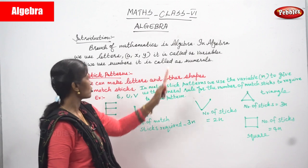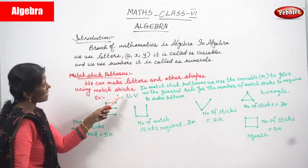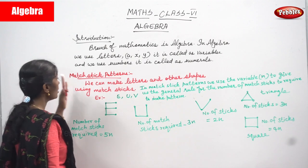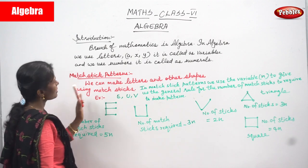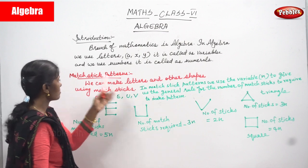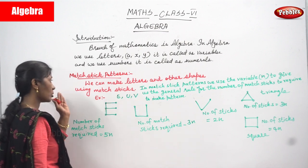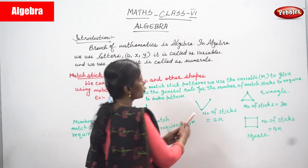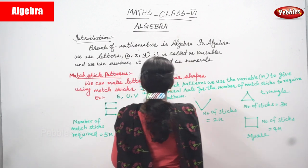We can make letters and other shapes with the help of matchsticks. Using matchsticks, we can form letters and other shapes. In matchstick patterns, we use the variable N to give the general rule for the number of matchsticks required to make a pattern.